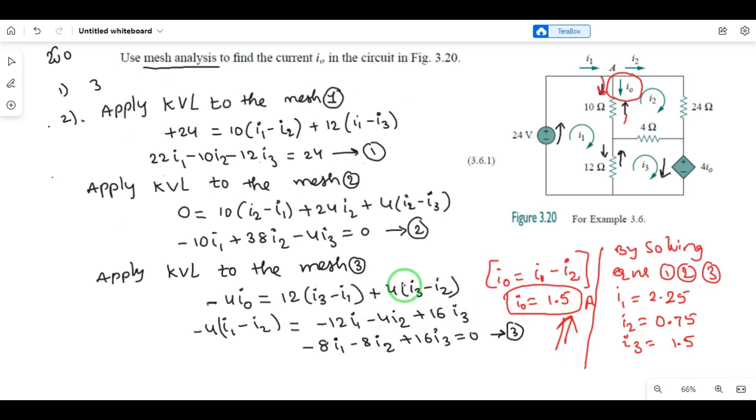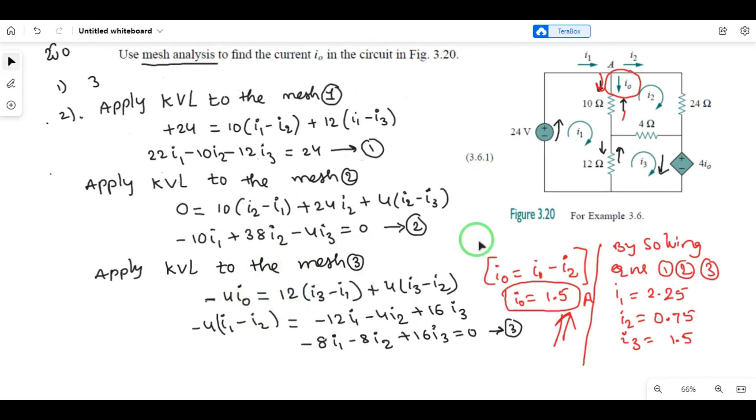So for dependent sources, we solve as usual, but we need to replace the dependent variable with an equation. By solving and practicing 2 to 3 problems, you can understand the topic. Thank you.